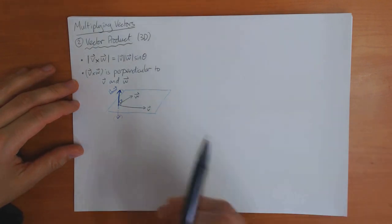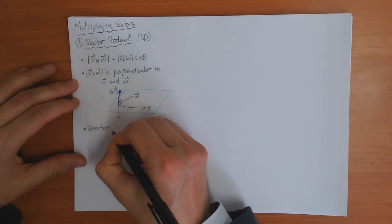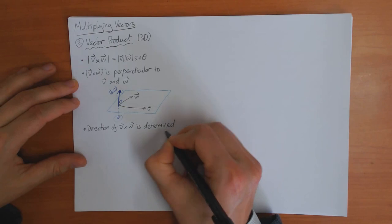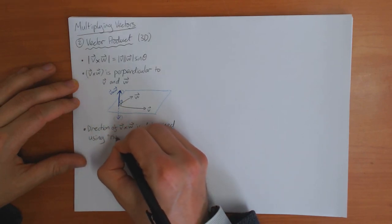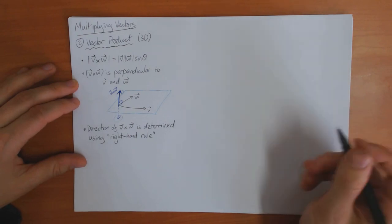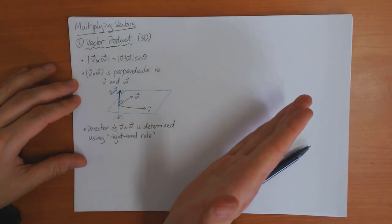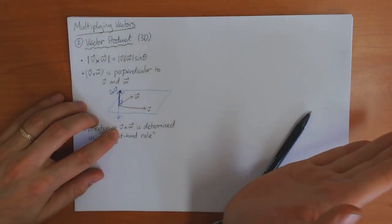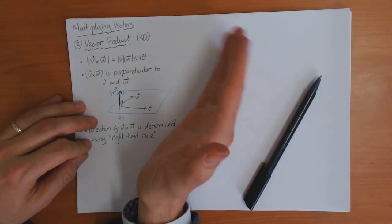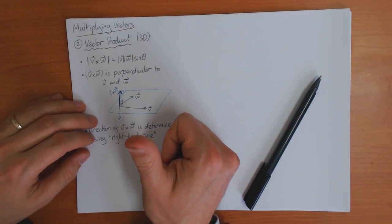This is the content of the third part of the definition, which says that the direction of the vector product is determined using something called the right-hand rule. The right-hand rule means the following: you take your right hand and you imagine that with your hand you push the first vector v towards the second vector w. And then the direction your thumb is pointing will tell you the direction of the vector product.